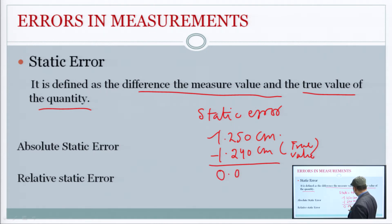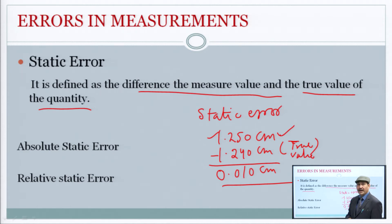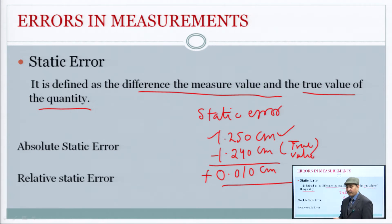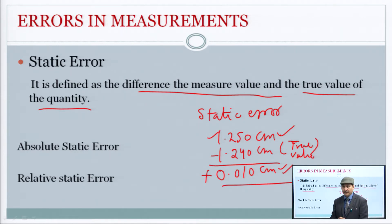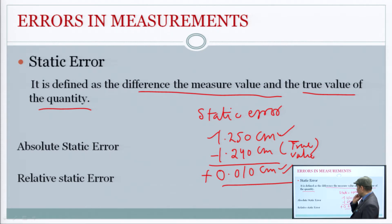So that static error will be 0.010 centimeter, and it is a positive error. Absolute static error means you concentrate on the magnitude only — that is 0.010 cm — and that is the absolute static error.